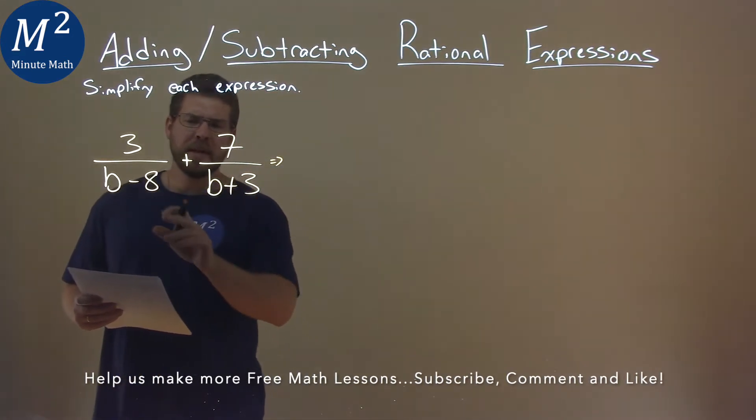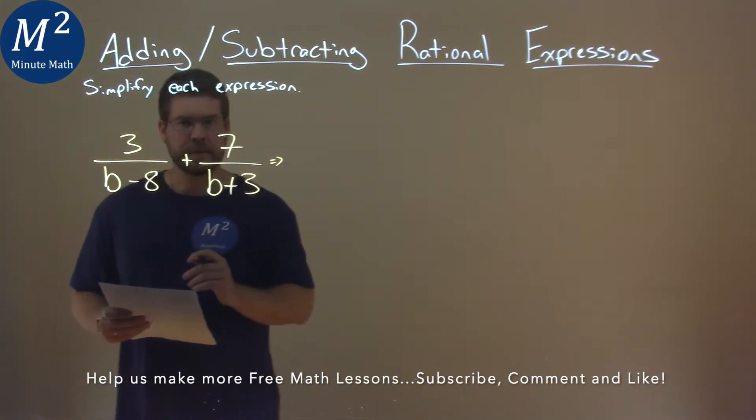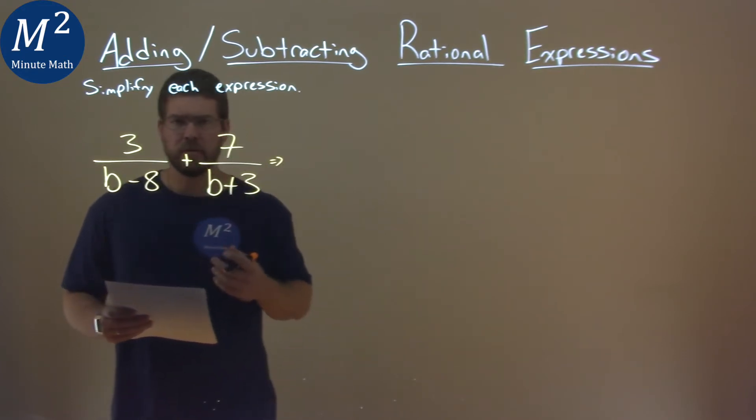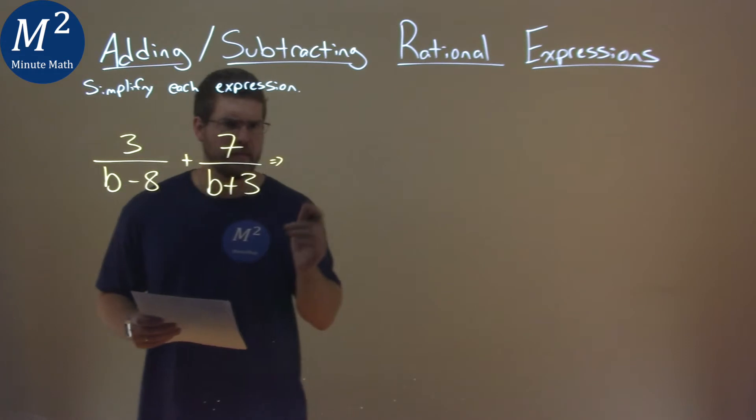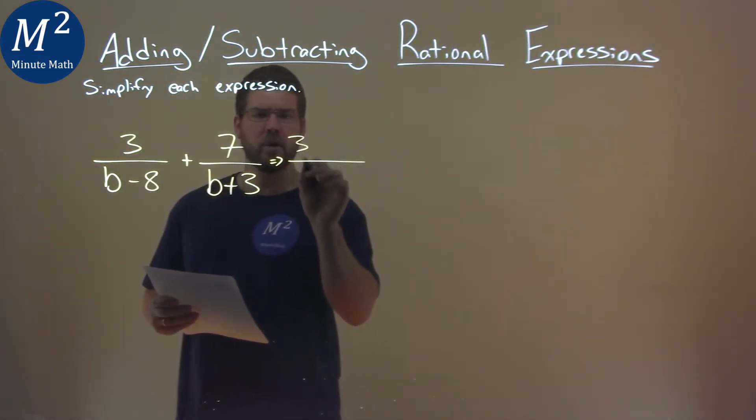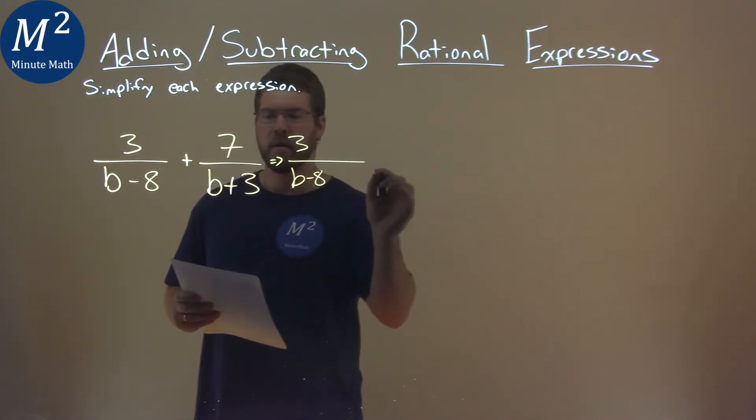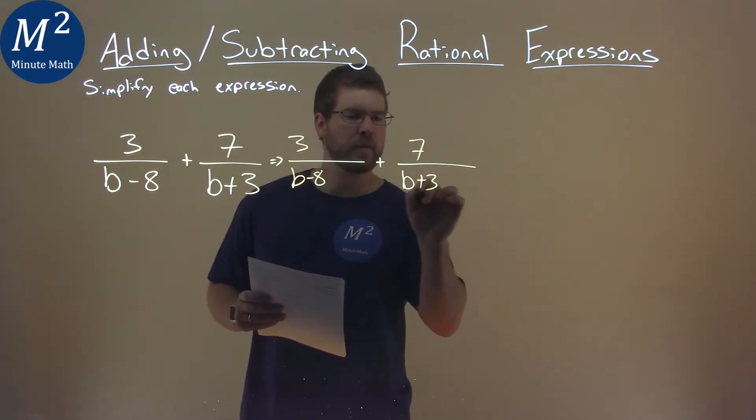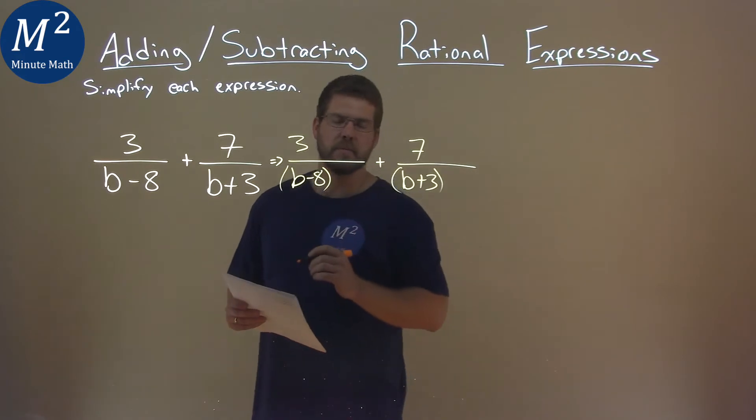Well, we need to have the same base here. Because if we have the same denominator, we can add these expressions or fractions, but we don't have that. So I'm gonna rewrite this: 3 over b minus 8 here, plus 7 over b plus 3, and I'm gonna show you how we can get the same denominator.